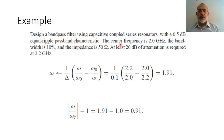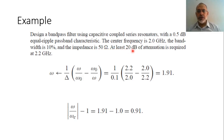The center frequency is 2 GHz and the bandwidth is 10%. The input impedance of the filter is 50 Ohm and it is required to obtain at least 20 dB attenuation at 2.2 GHz.